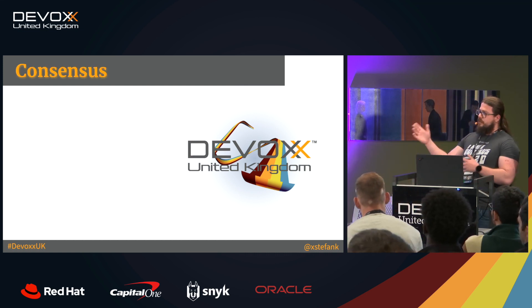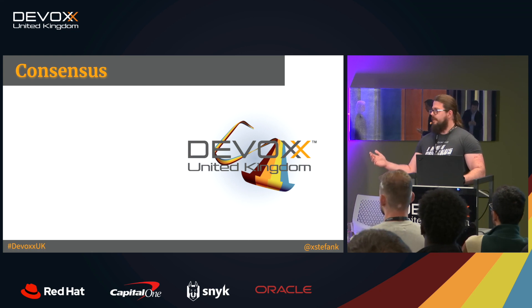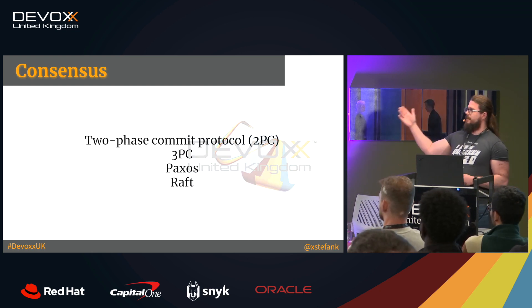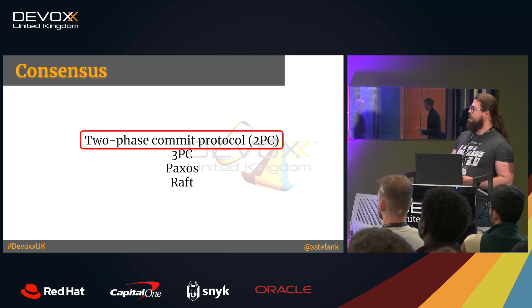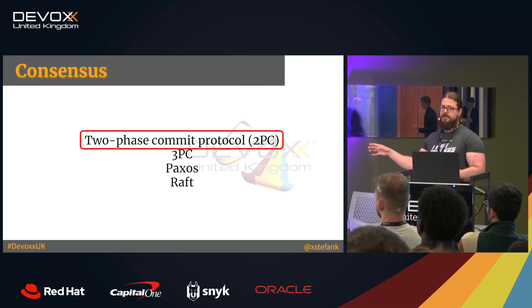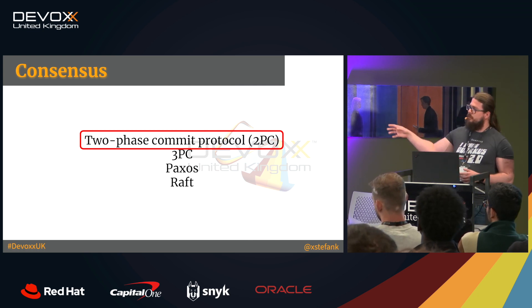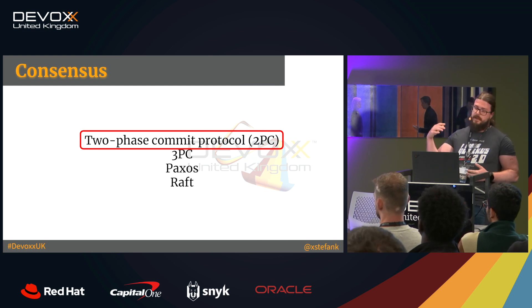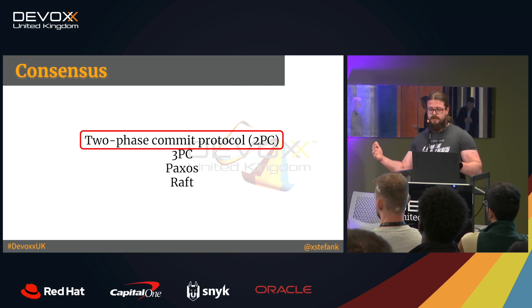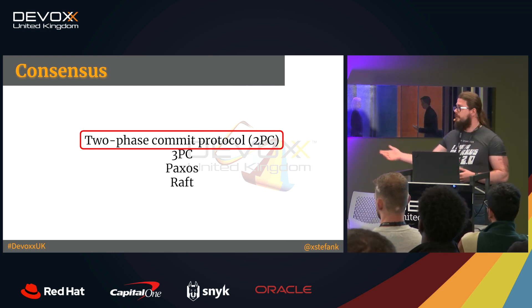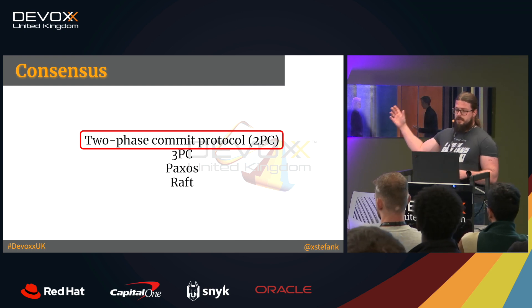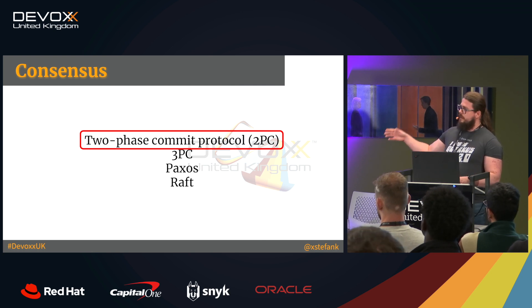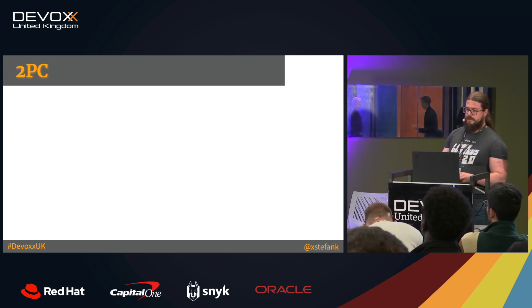To achieve ACID, we use something called a consensus protocol. There are several of them; however, the only real use is 2PC, because the more complicated ones don't bring enough benefits for people to implement them. The issue with consensus protocols is easiest to demonstrate on 2PC, so we will stick to it.